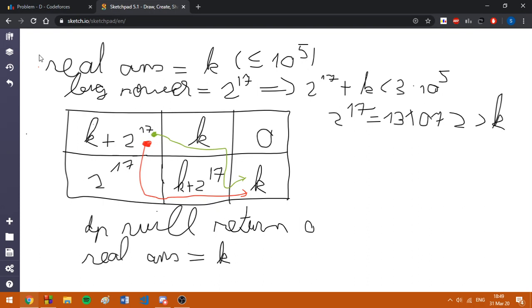but not too big in order to fit in the constraint of number. I'm going to use 2^17, because 2^17 plus k is smaller than 300,000, here is the proof.